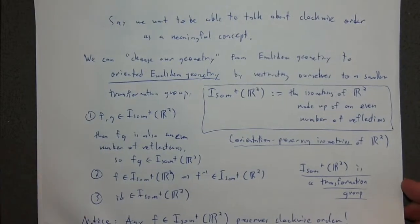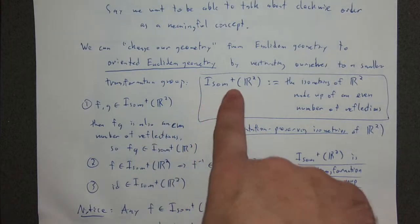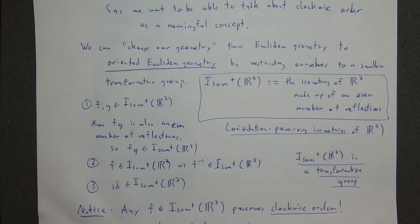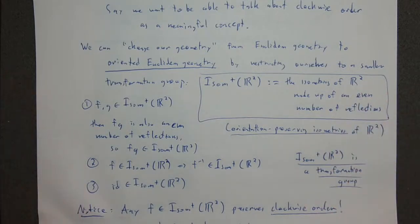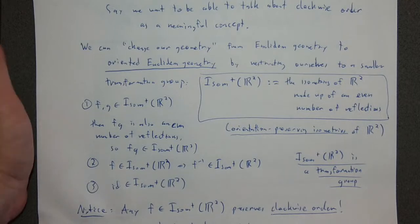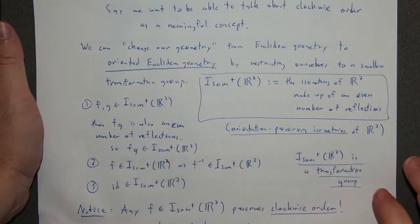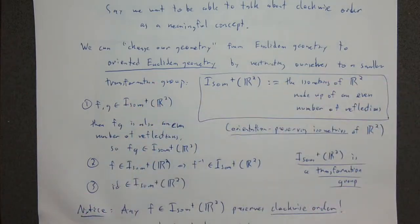Our basic example was changing the Euclidean isometries of the plane to isom+(R²), which were the direct isometries — the isometries of R² made up of an even number of reflections instead of up to three reflections. So we're restricting our transformation group, and this changes the geometry. Now this is oriented Euclidean geometry, meaning orientation becomes something actually preserved by the isometry. Typically, an isometry does not preserve orientation.